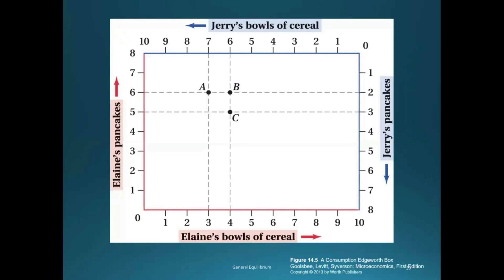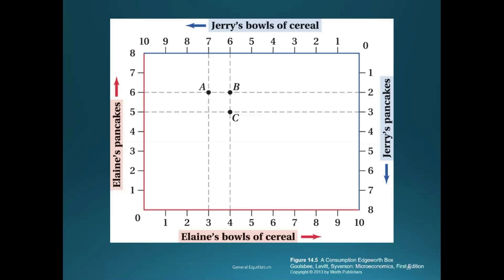Let's look at a particular example. Starting at point A: to get the number of pancakes for Elaine, we look at the left vertical axis, which shows Elaine is getting six pancakes. To get the number of bowls of cereal for Elaine, we go to the bottom horizontal axis. So point A implies Elaine is getting six pancakes and three bowls of cereal. To find how many of each good are allocated to Jerry at allocation A, we trace the point out to the other axes — the top horizontal axis tells us how many bowls of cereal Jerry is getting.